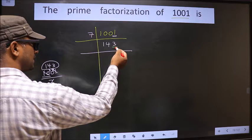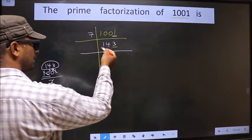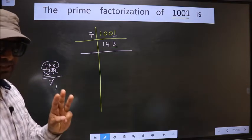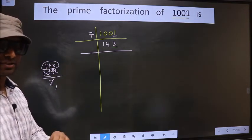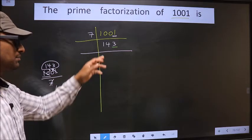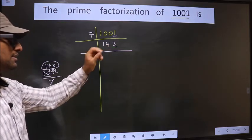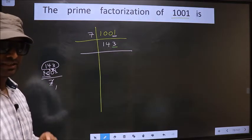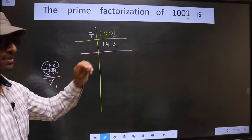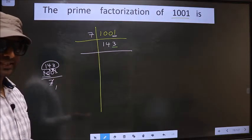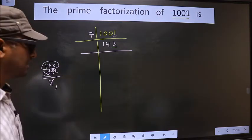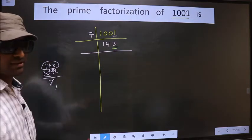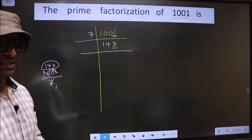For 143, the last digit is 3, which is not even, so this number is not divisible by 2. Next prime number 3 — adding the digits: 1 plus 4 plus 3, we get 8. Is 8 divisible by 3? No, so this number is also not divisible by 3. Next prime number 5 — the last digit is neither 0 nor 5, so this number is not divisible by 5.